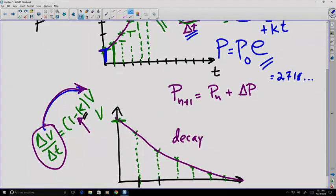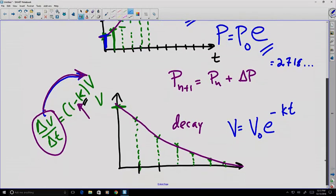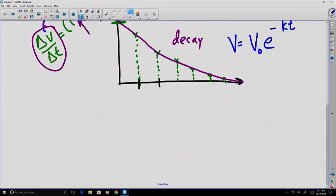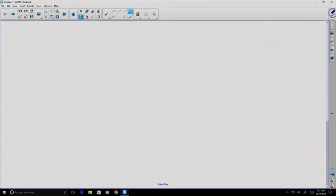For our decay, same idea. My volume here would be equal to the initial volume, E to the KT. But in this case, there is a negative value in there for our exponential function. Now, you can look for exponential functions in any place where you can kind of see where the rate of change of something might depend upon the thing itself.